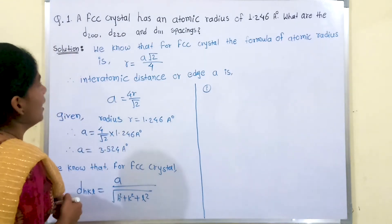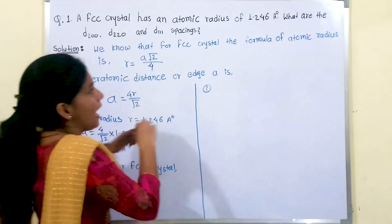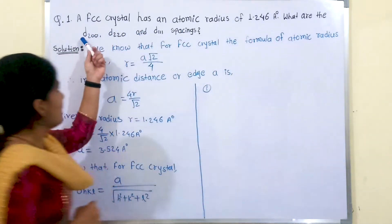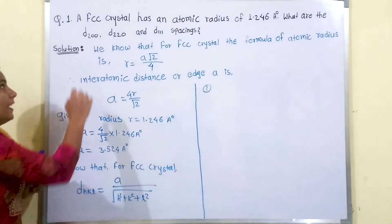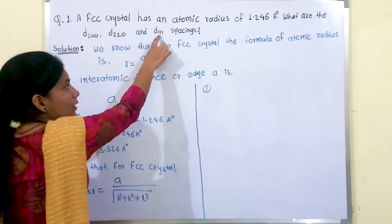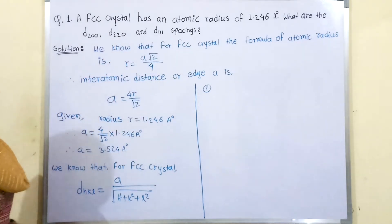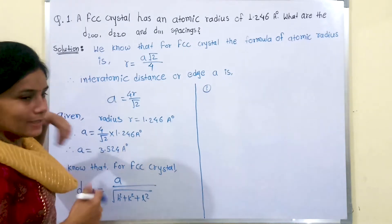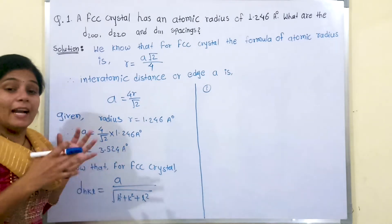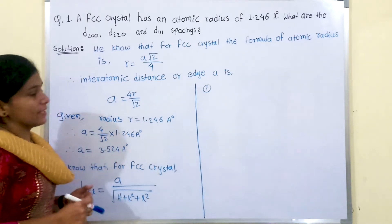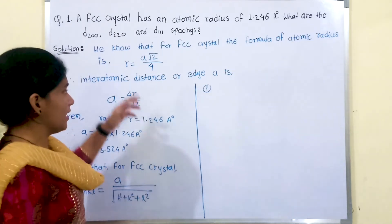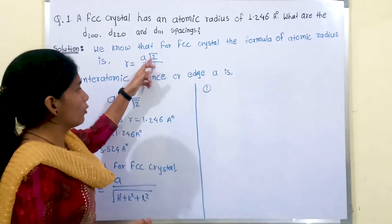We have the first question: an FCC crystal has an atomic radius of 1.246 Å. What are the interplanar spacings D along the (2,0,0) plane, along the (2,2,0) plane, and along the (1,1,1) plane? We know that the formula for atomic radius in an FCC crystal structure is R = A√2 / 4.